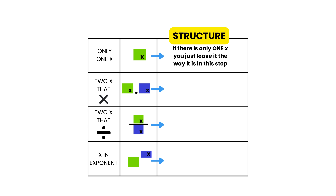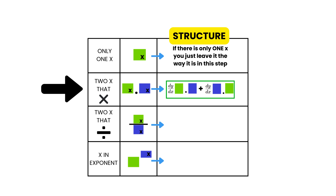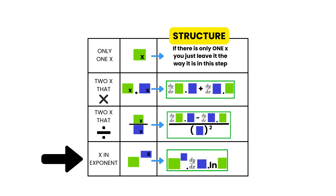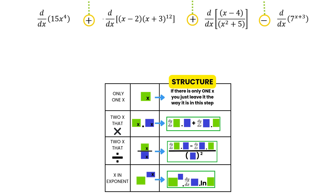The structures look like this: when we have two x's being multiplied, when we have two x's being divided, and when the x is up in the exponent. Let's now build these structures using our example. We've already identified that in our first term we have just one x, so when there's only one x there's no special setup needed — it just gets carried over exactly as it is.